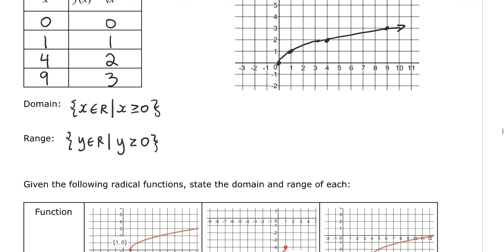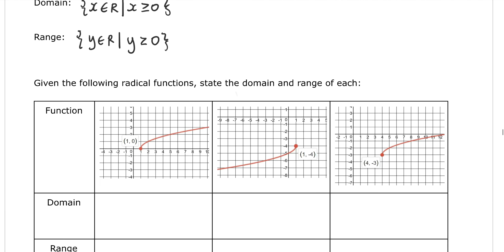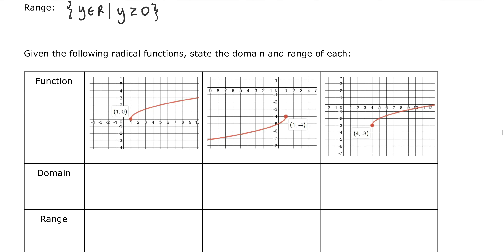Here are some examples of the square root function that has been transformed. Without knowing the details of the transformations, we can still look at the function graphs and determine the domain and range. For the first one, the square root function starts at (1, 0), so the x values start at 1. The domain is x ≥ 1. For the range, we start at y = 0 and go upward, so y ≥ 0.